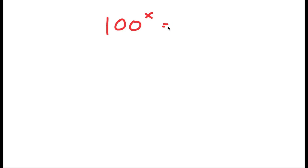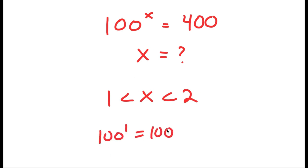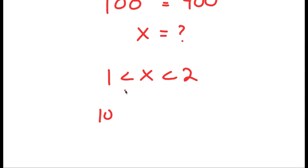In this video I'm going to solve an interesting exponential equation. My equation is 100 to the power of x is equal to 400. We can see that x is going to be between 1 and 2, because 100 to the power of 1 is 100 and 100 to the power of 2 is 10,000. So it's going to be closer to 1 than 2, but somewhere in the range of 1 and 2.